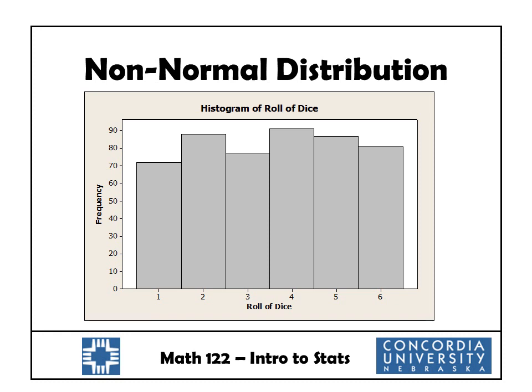Here's another example dealing with the roll of a dice. We rolled it and recorded the frequency of getting a 1, 2, 3, 4, 5, and 6. Notice that all of those frequencies are roughly the same — not exactly the same, but roughly. Our histogram definitely does not have a bell curve shape; in fact, it's kind of flat on top. This type of distribution has a special name called a uniform distribution. We'll talk more about uniform distributions later on, but this is not a normal distribution.